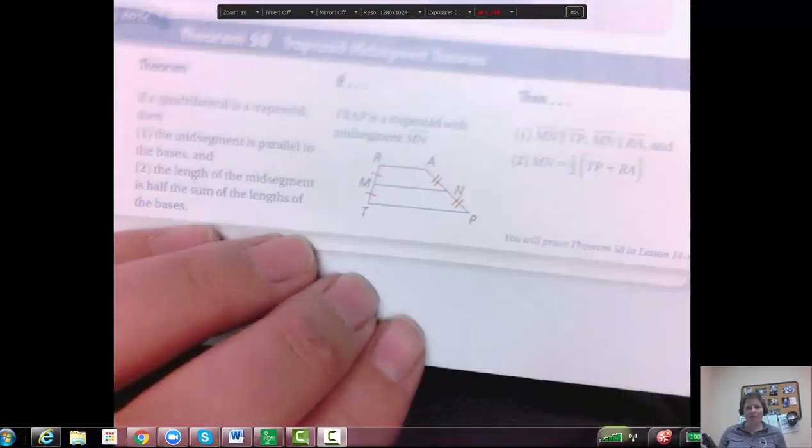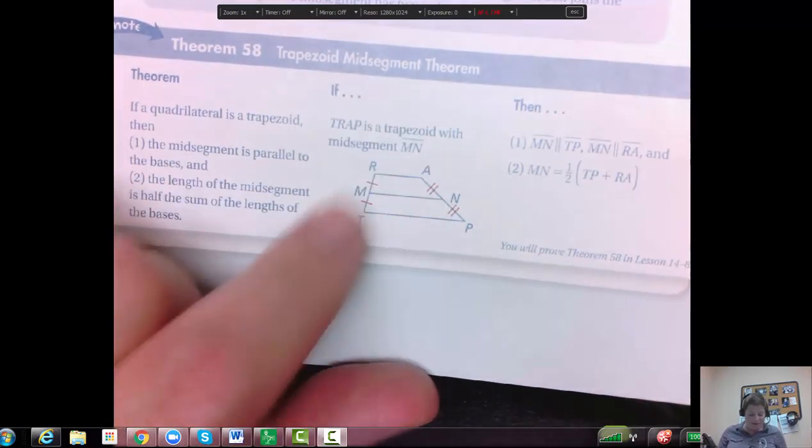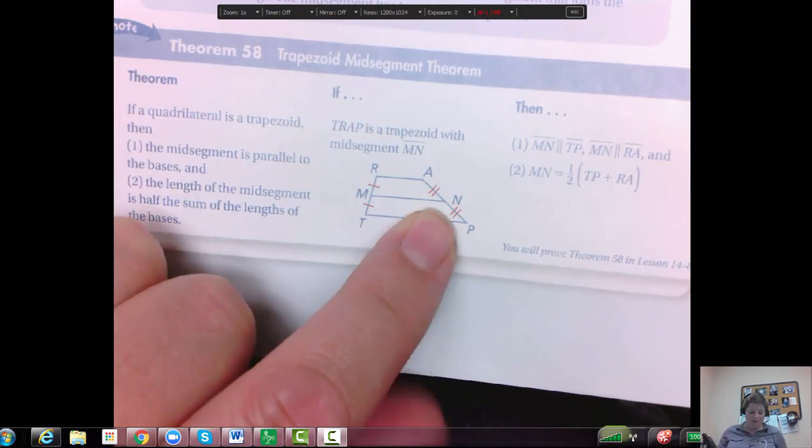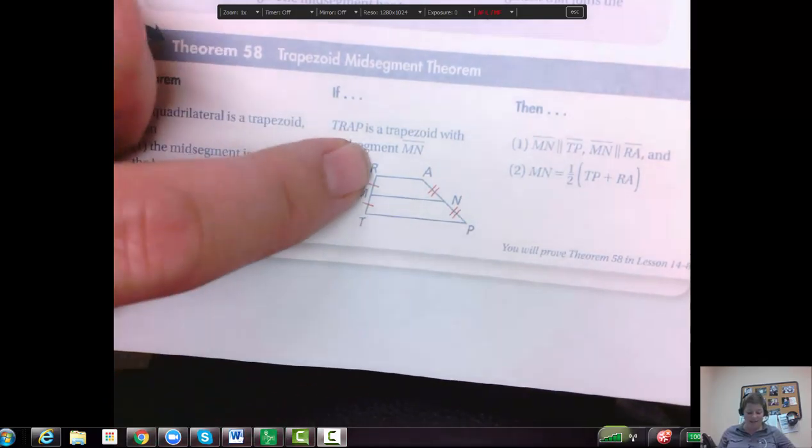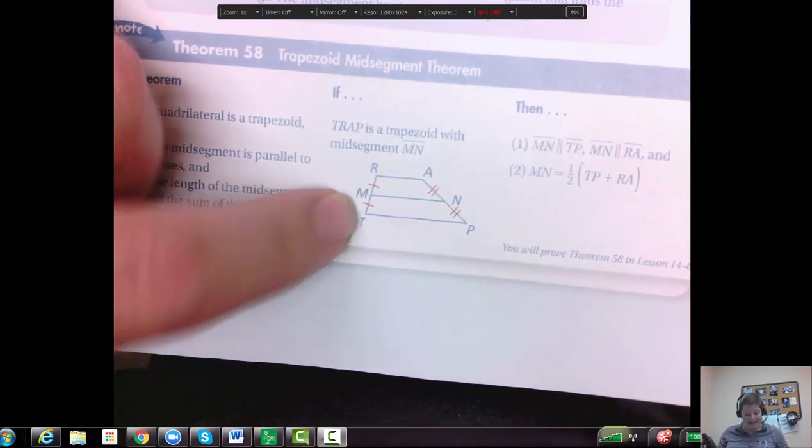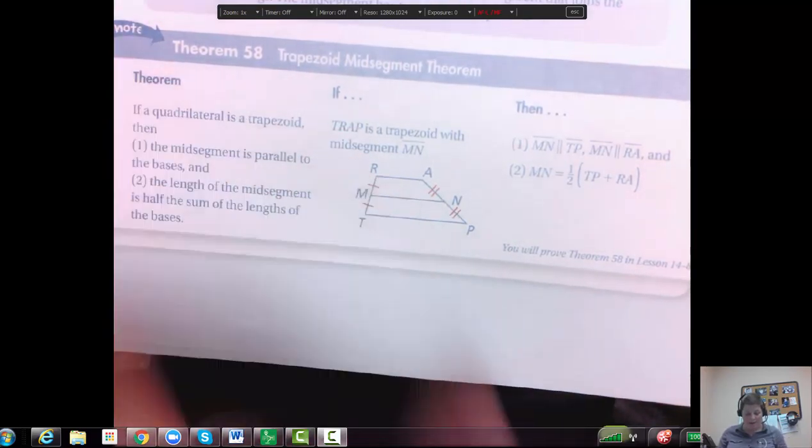So the last one's a little bit harder. It says if I have a trapezoid that has a midsection, so this midsection is bisecting RT and it's bisecting AP. You can see that this one's congruent to this one and this side's congruent to this side.